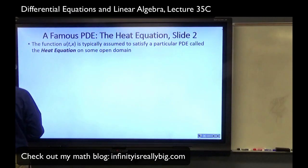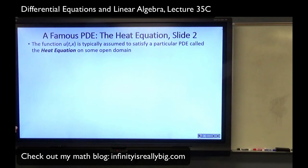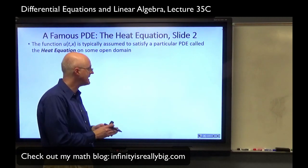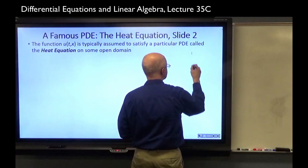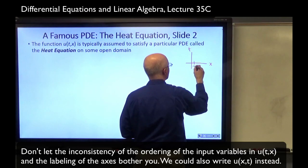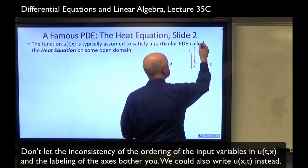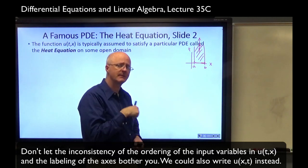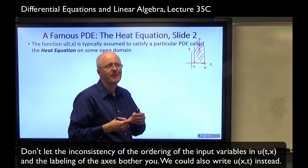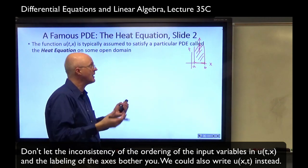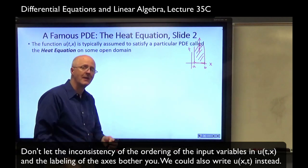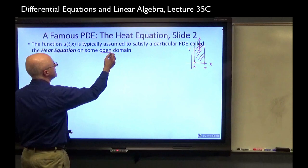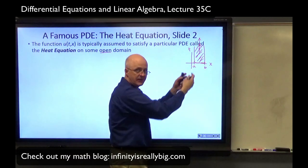The function UTX is typically assumed to satisfy a particular PDE called the heat equation on some open domain in the TX plane. X is between A and B. T is greater than or equal to zero. It's typically thought of as an XT plane with X horizontal and T vertical. The domain might be something like this infinite strip that goes up forever in the T direction. Along the boundary, that's where the lack of differentiability could occur. On the interior, in the open part, you would want things to be nice and smooth.